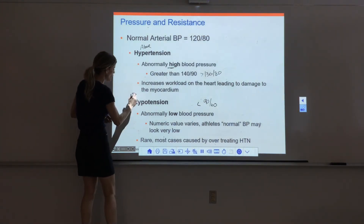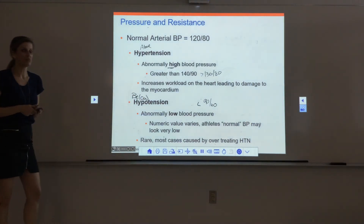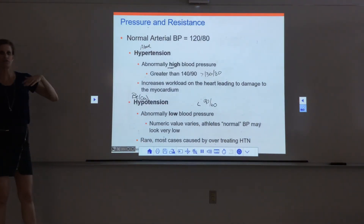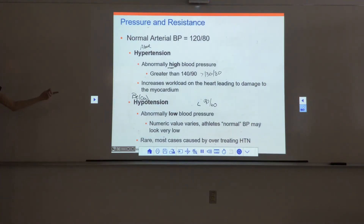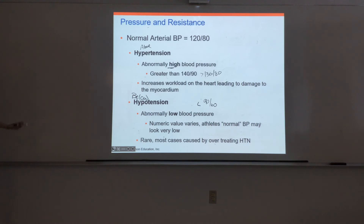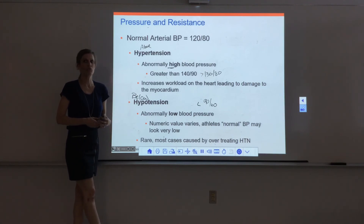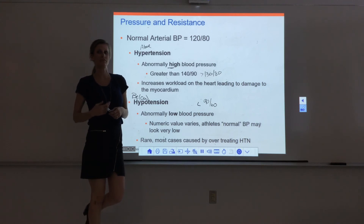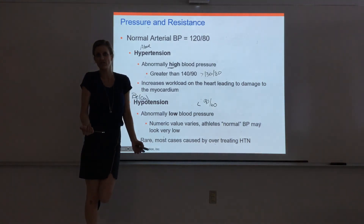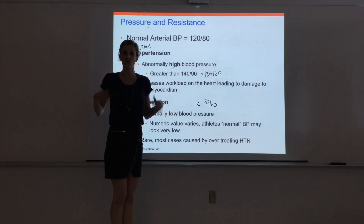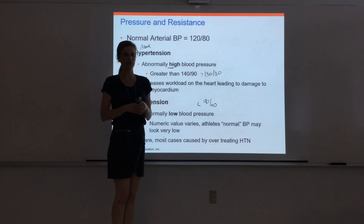Hypotension — hypo meaning below — is an abnormally low blood pressure, often cited as less than 90 over 60. This can vary greatly depending on the person; a well-trained triathlete may naturally have very low blood pressure due to the efficiency of their cardiovascular system. Natural hypotension is rare. Clinically, most hypotension is caused by medications — like giving too much of a blood pressure medicine — or by volume depletion such as bleeding out or dehydration.